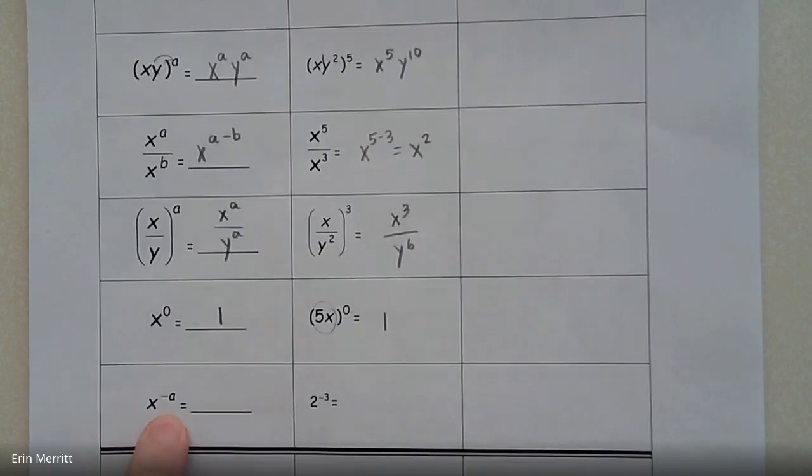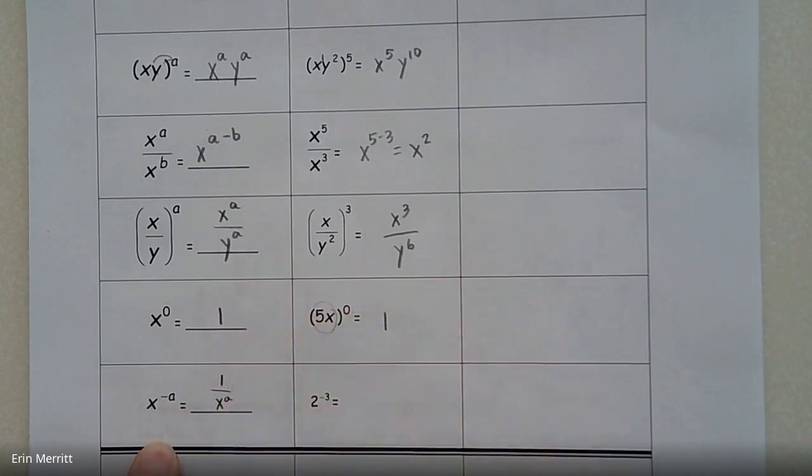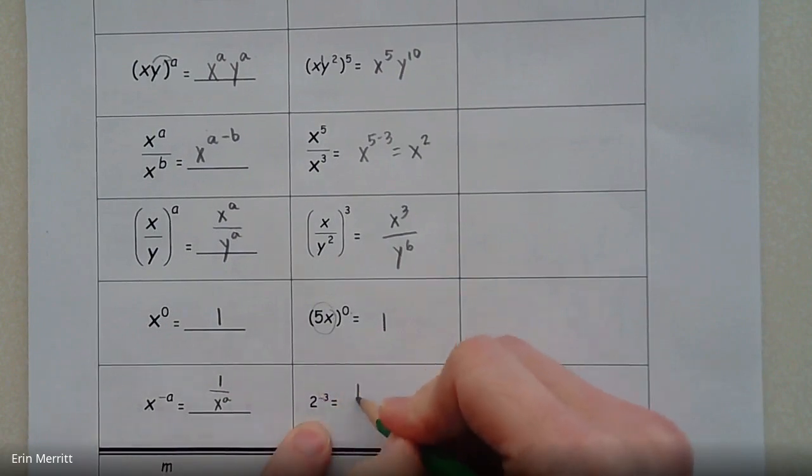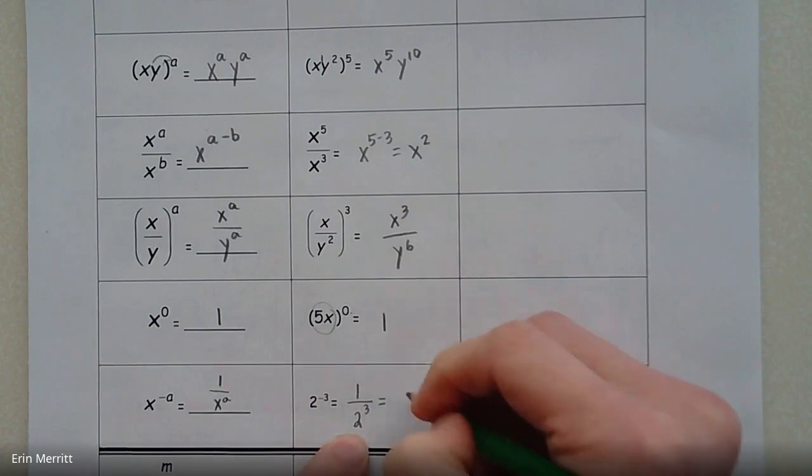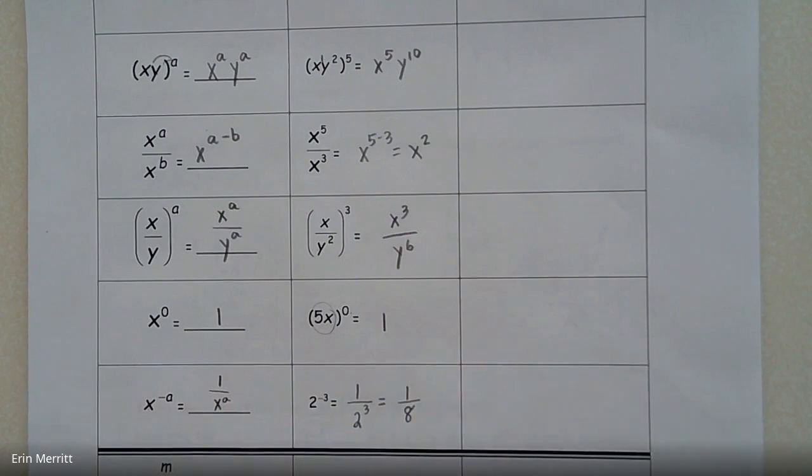All right, this one we're going to do more practice with in class today. But x to the negative a power, that becomes the reciprocal, or 1 over x to the positive a power. So in this case, if I have 2 to the negative third, that becomes 1 over 2 now to the positive third power. And then if you can go further, go ahead and do it. So 2 cubed is 8. That's what that would be equal to.